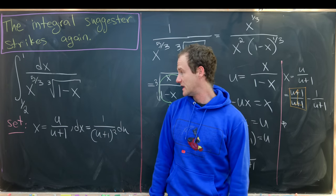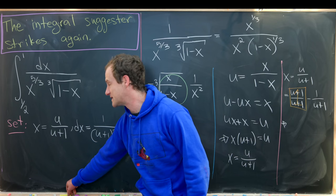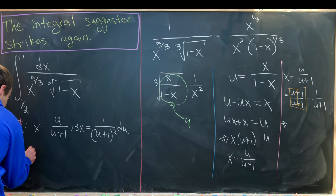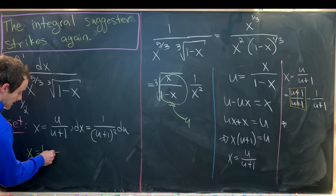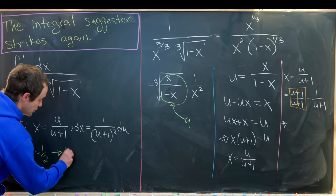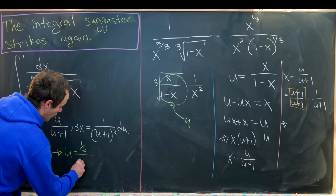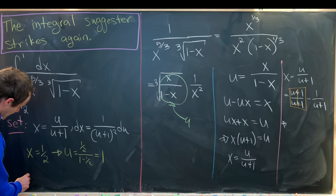And there's one last thing that we need to take care of before we finish this off, and that is what happens to the bounds of integration. So let's see. If x is equal to 1 half, so that would be this lower bound of integration. Then that tells us that u is equal to 1 half over 1 minus 1 half, but that's equal to 1. So that's pretty clear. Great.